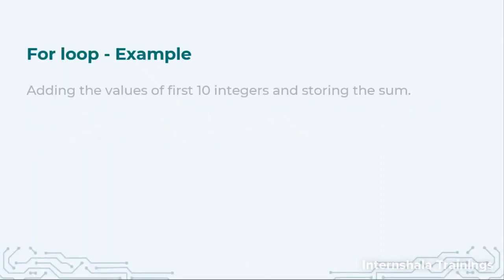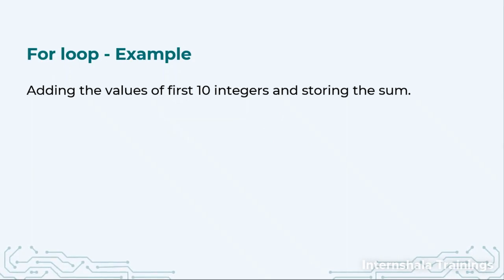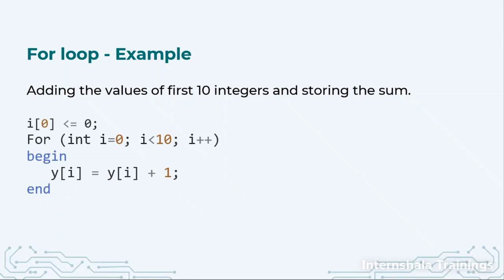The example is: we are going to add the first 10 integers starting with 0. So that means we have to traverse from 0 to 9. These will be our 10 integers.